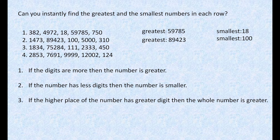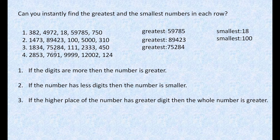Now let's move to the next example, which has 1834, 75,284, 111, 2333, and 415. This number 75,284 has five digits — more digits — so the greatest number is 75,284. For the smallest, we again have two numbers with the same number of digits. Comparing the highest place: one has 1 and the other has 4. Since 1 is smaller compared to 4, the smallest number is 111.